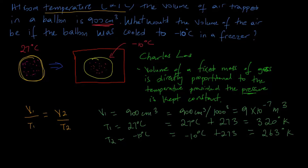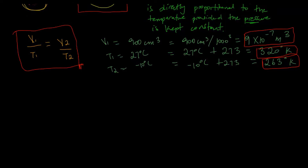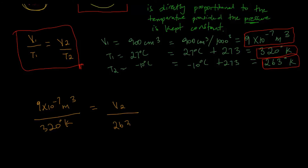So these are the values we'll be using in our expression. Using our formula, we have V1 — which is 9 times 10 to the minus 7 meters cubed — divided by T1, which is 300 degrees Kelvin, equaling V2 — which is the unknown — over T2, which is 263 degrees Kelvin.